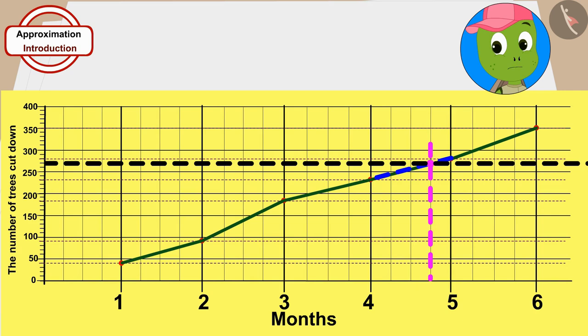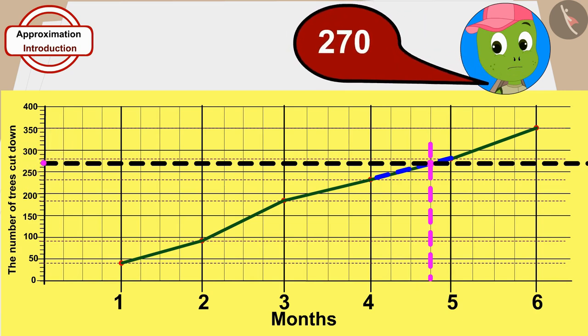Oh God! This point is at 270. By the end of the 3rd week of the 5th month, a total of 270 trees were cut.